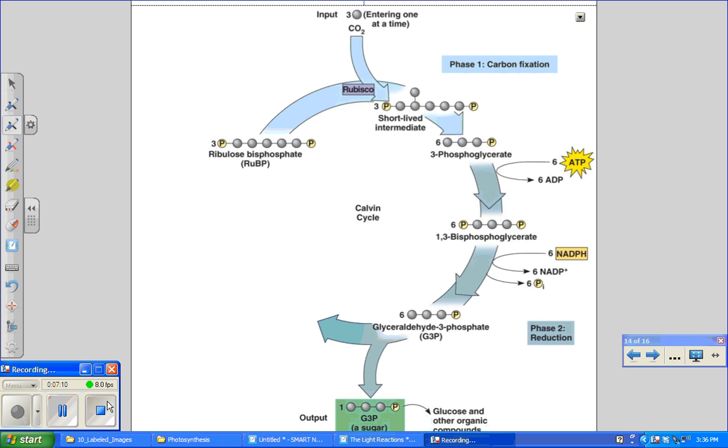Each turn of the Calvin cycle fixes one molecule of CO2, so it will take three turns of the Calvin cycle to net one glyceraldehyde-3-phosphate. Glyceraldehyde-3-phosphate is a sugar and it can be used to make glucose and other sugars. It's also interesting to note that glyceraldehyde-3-phosphate is the product of splitting glucose during glycolysis.